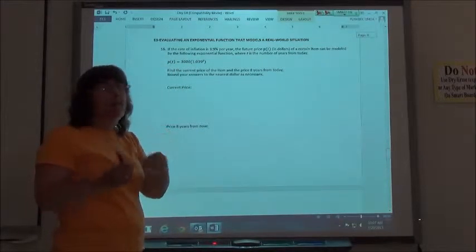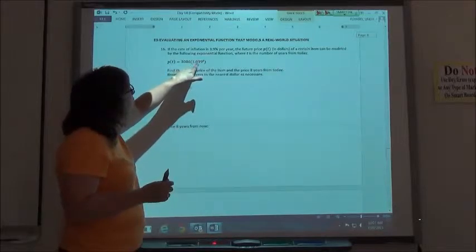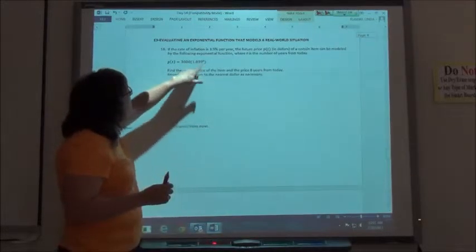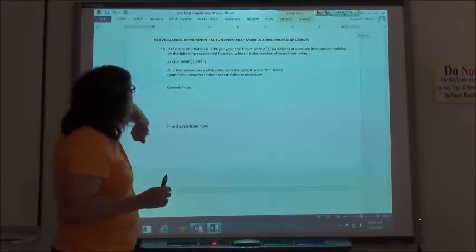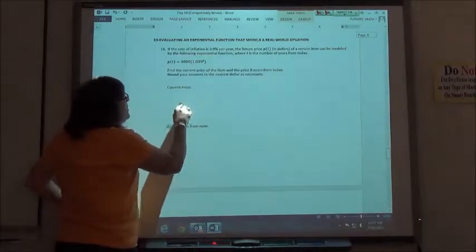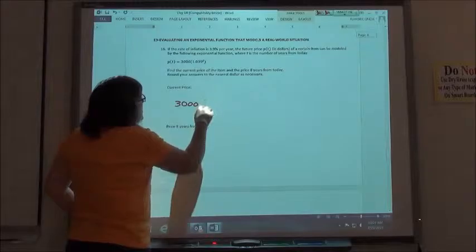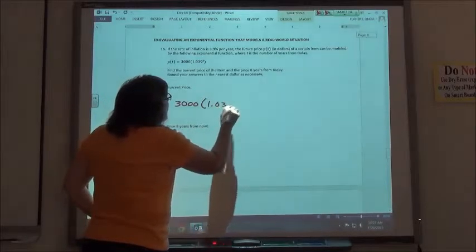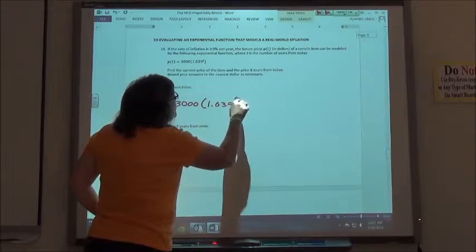$3,000 is actually the price that they invested or put in there. The 3.9%, because I'm gaining value, I have 100%, the full amount I invested, plus the interest. So 1 plus 3.9%, and then it's going to be to the T years.